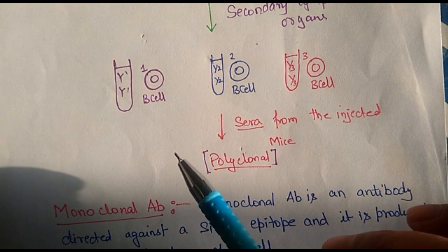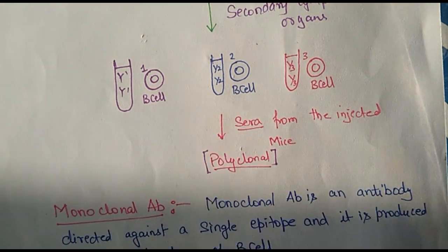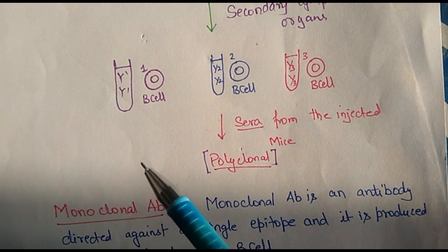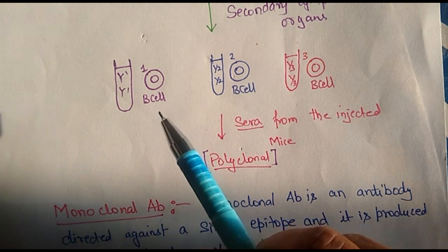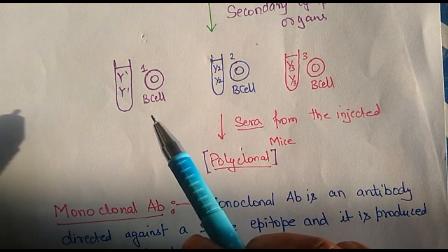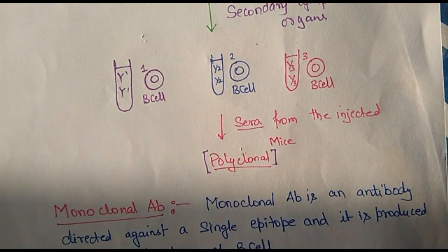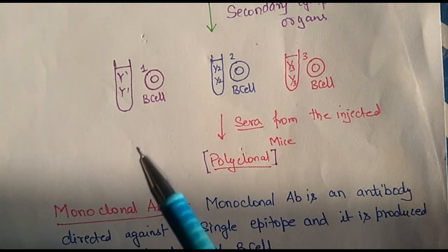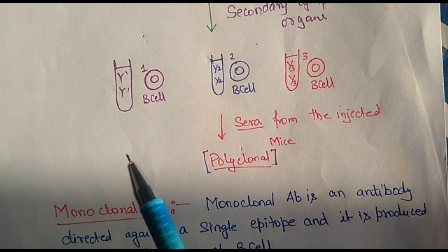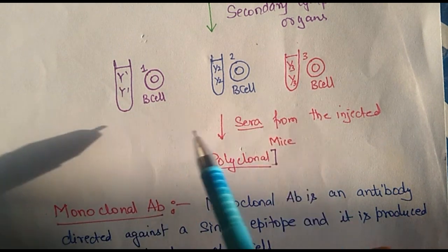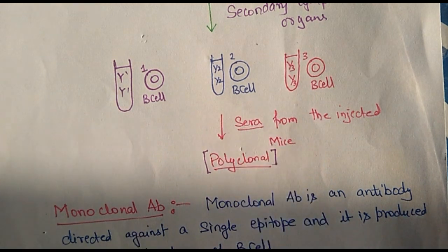Each of these B cells — let's talk about B cell number 1 — basically starts to divide. So one B cell gives rise to 2, 2 gives rise to 4, 4 to 8, 8 to 16, and 32, and so forth. This B cell can give rise to many other B cells, and all these B cells will be producing antibodies against epitope number 1. So we can say this is a clonal population of B cells. This clone will be uniformly producing antibodies against epitope 1 only — so this is monoclonal. If we combine all three B cells in the population, then it becomes polyclonal.